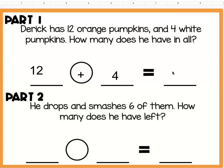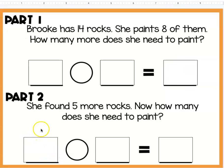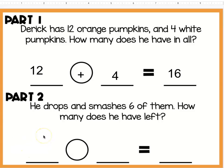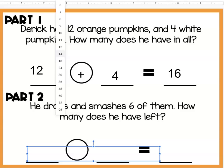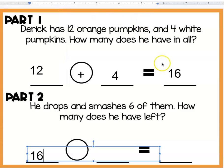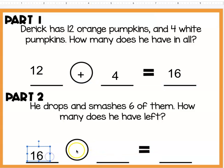But then in part 2, it says that he drops 6. So remember, now we have 16 pumpkins, and if you drop them then we're losing them. So we're subtracting.